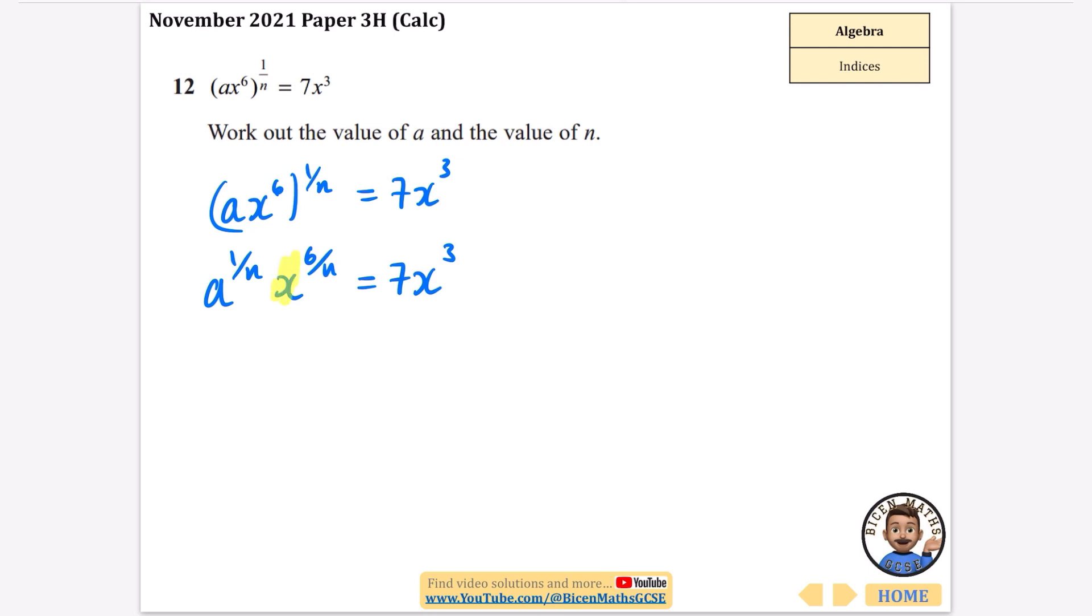So looking at this, we can say that this part must be equivalent to this part, and similarly, we could say that this part that we have here must be equal to 7. So I'm going to begin by saying that x to the power of 6 over n must be x to the power of 3. Well, that means we can just look at the powers. 6 divided by n must be equal to 3. Ah, that must mean that n is equal to 2.